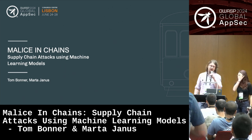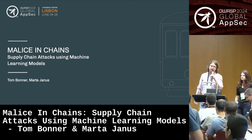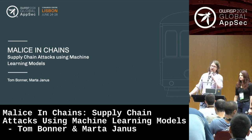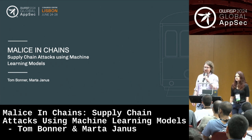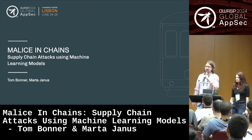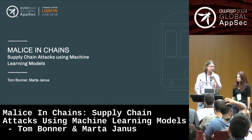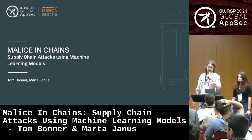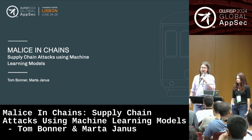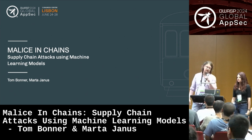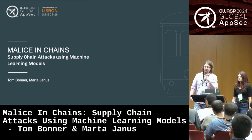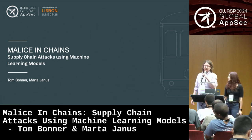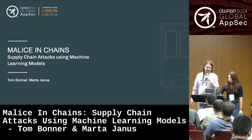My name is Tom Bonner. I'm VP of Research at Hidden Layer, where we look into AI security. We cover everything from supply chain and model file format issues to inference attacks against predictive AI, generative AI, and things like that.